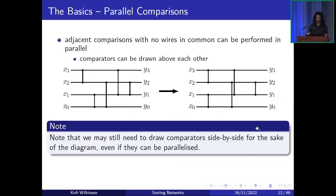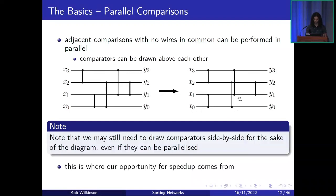You might have already noticed that adjacent comparisons in the network with no wires in common can be performed in parallel. Diagrammatically, we draw those comparators above each other. Note, however, that we may still need to draw some comparators side by side for the sake of the diagram — so two comparators can be performed in parallel but drawn closely next to each other. This parallelism is where our opportunity for speed-up comes from.